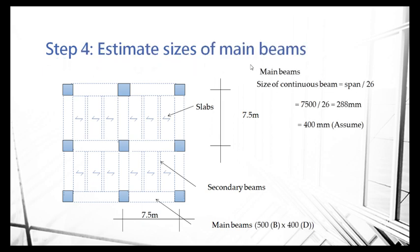Now we try to estimate the size using the span-depth ratio. We try the main beam first — this is so-called continuous, as I mentioned before. Use the formula span divided by 26. Remember, span is the distance between the centerline of column to column. After calculating the result — for example, if your result is 288 — you need to allow some contingency. Try to assume it's 400 depth for this beam.